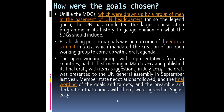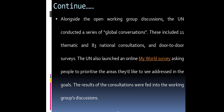The working group published its final draft with 17 suggestions in July 2014. The draft was passed to the UN General Assembly in September, member state negotiations followed, and the final wording of the goals, targets, preamble and declaration were agreed in August 2015. Alongside the open working group discussions, the UN conducted 11 thematic and 83 national consultations and door-to-door surveys, and also launched an online 'My World' survey asking people to identify areas they would like to see addressed. The results were fed into the working group discussions.